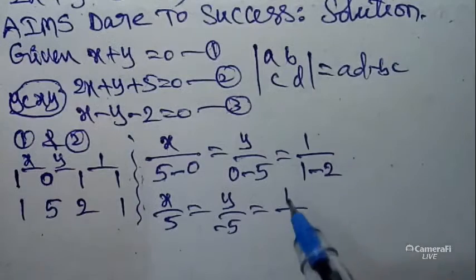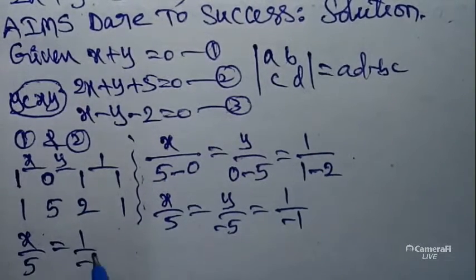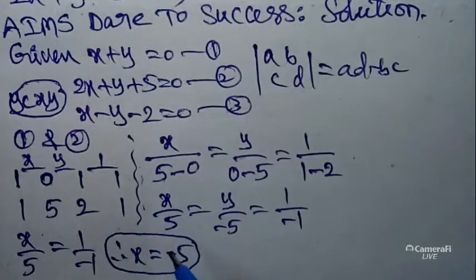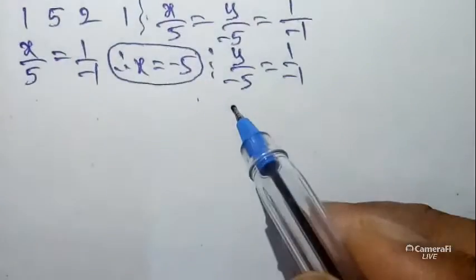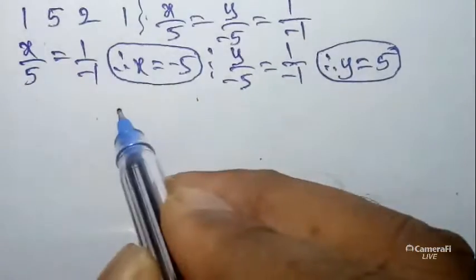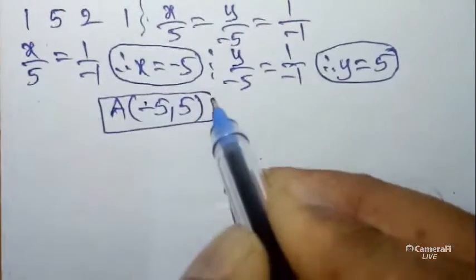To get x: equate x/5 = 1/(-1), cross multiply → x = -5. To get y: equate y/(-5) = 1/(-1), the negatives cancel, cross multiply → y = 5. Therefore, let point A = (-5, 5).